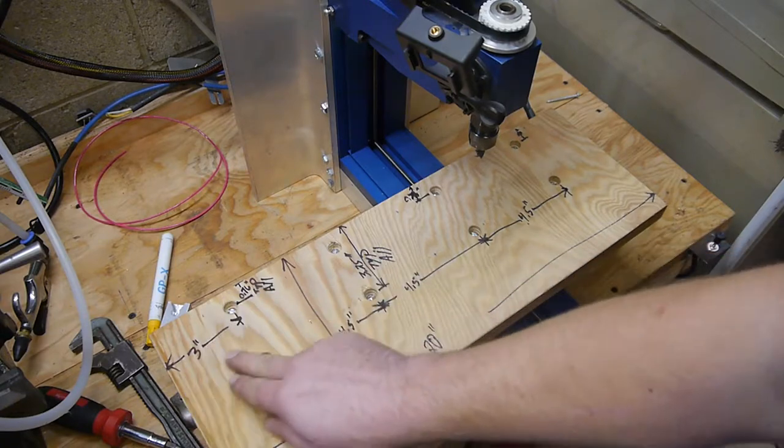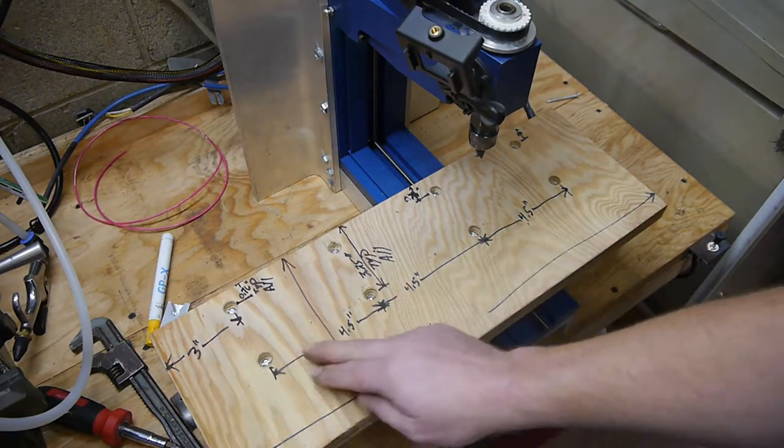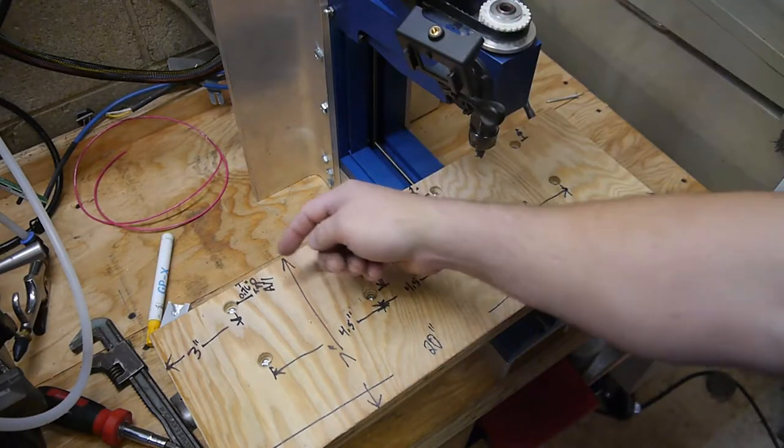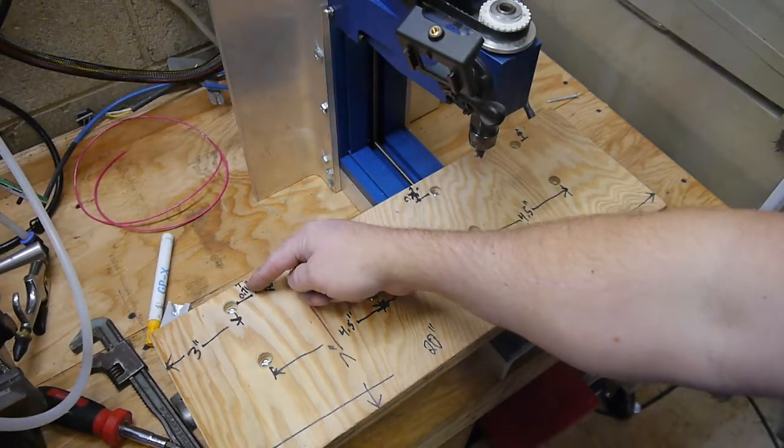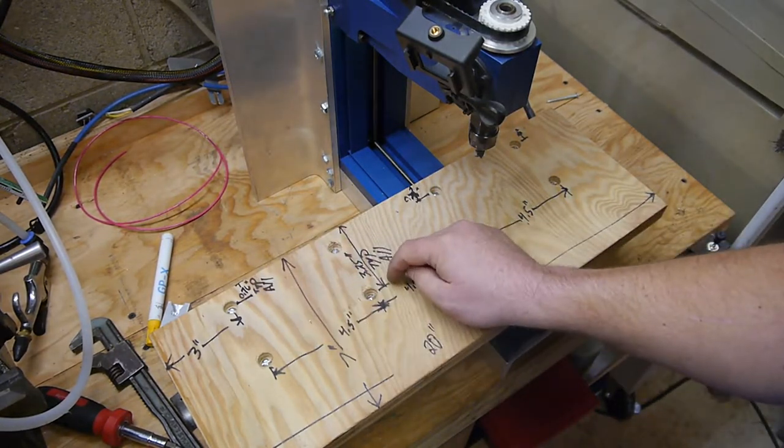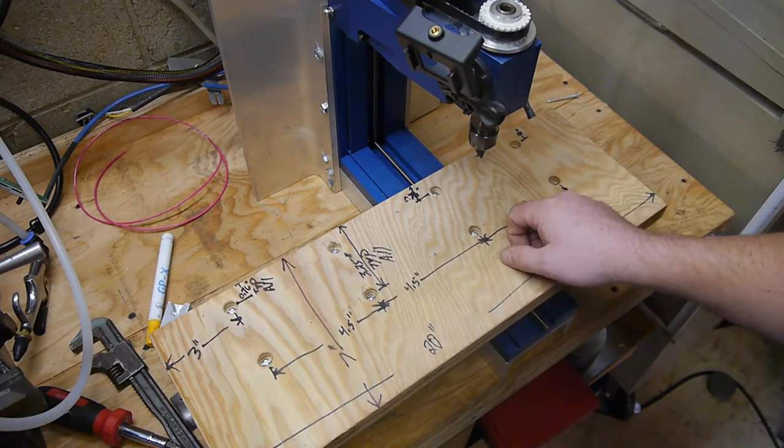First set of holes are 3 inches from the edge and then 4.5 inches on center for the next set. We are 0.76 inches in on the first hole and then 3.25 inches in on the next set of holes. And that's pretty much it.